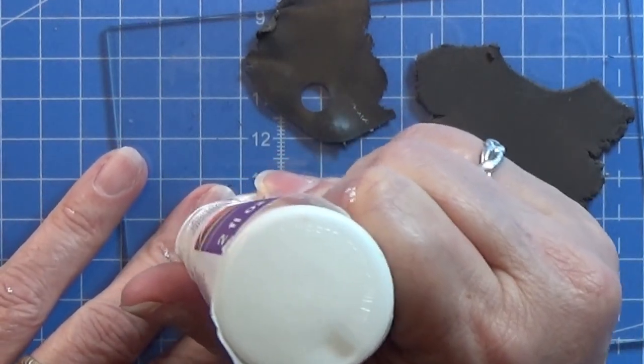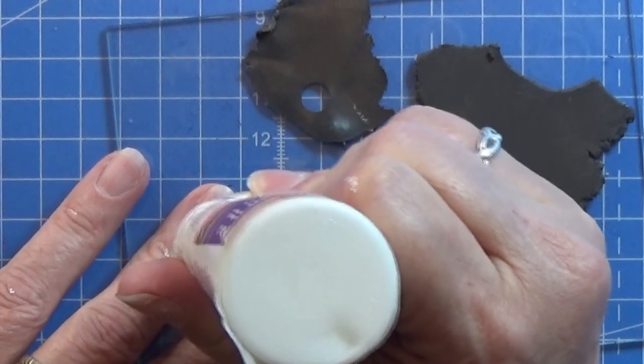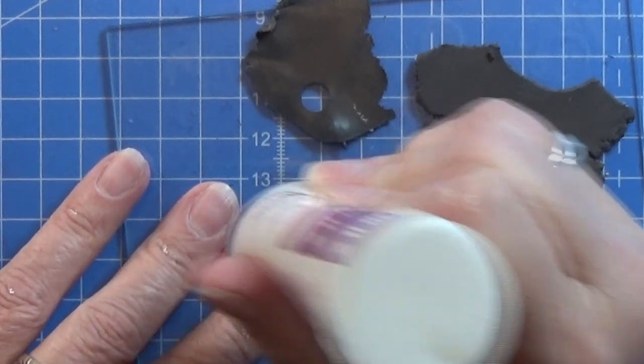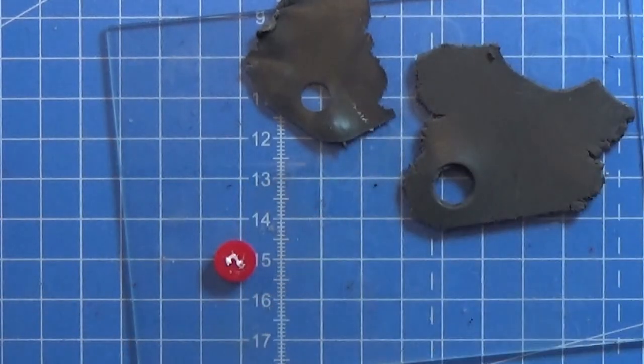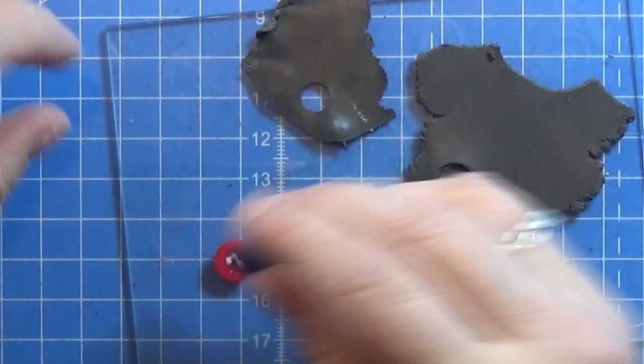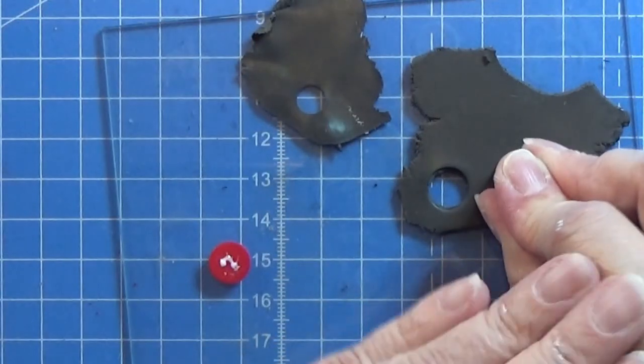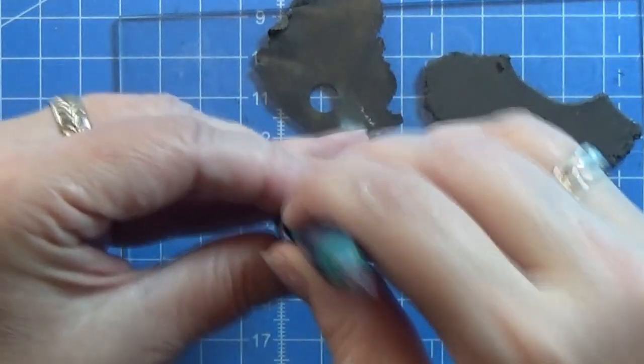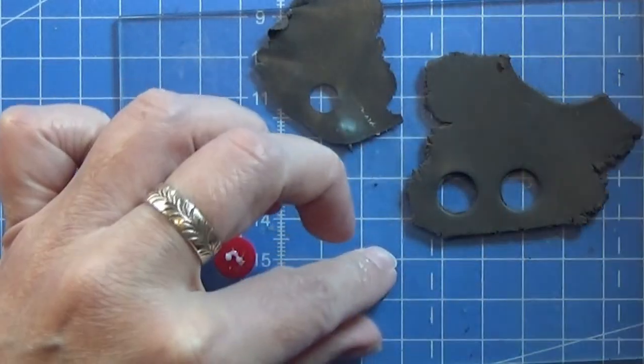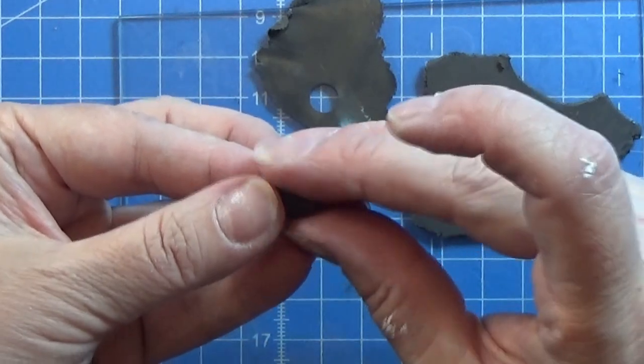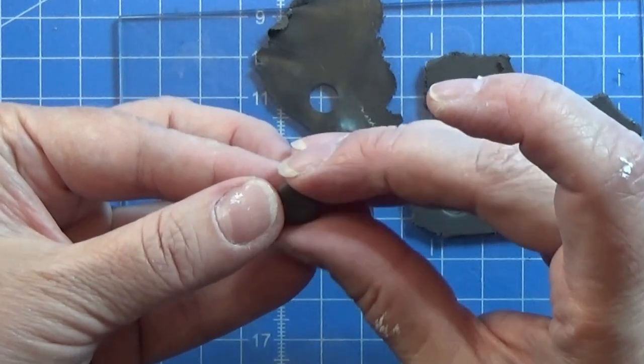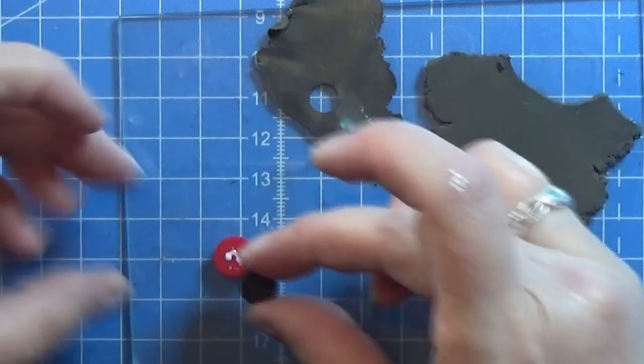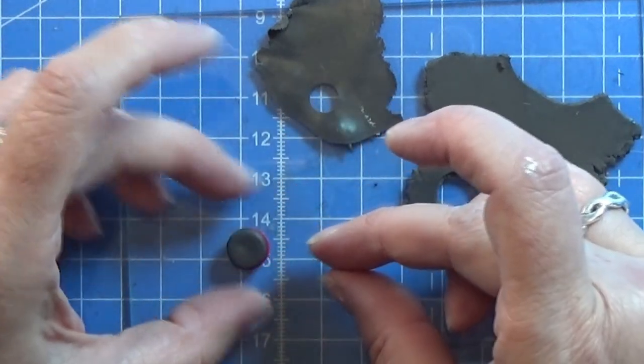I'm using a tiny bit of bake'n bond on the baked part here and then I'm using the same cutter that we used before to cut out a circle here in this clay rolled out on a setting three. I am just gonna shape it a tiny bit with my fingers here and place it on top of the bake'n bond.